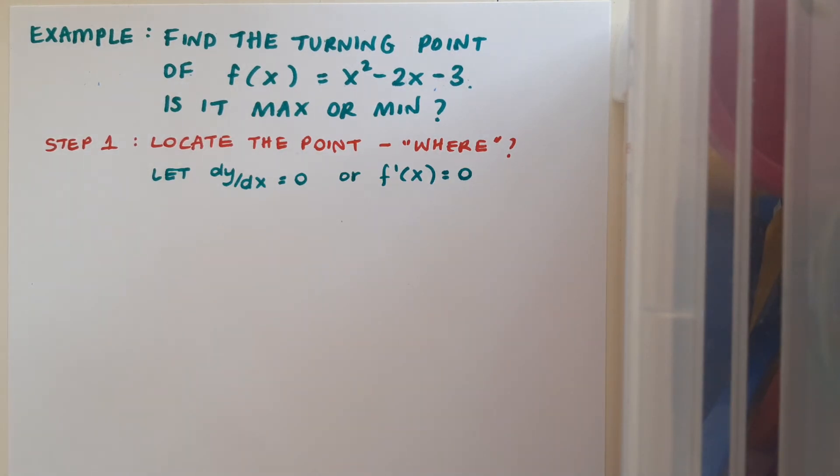So f'(x) just means I need to differentiate f(x). When I differentiate f(x), I'm going to get 2x - 2. Now I need to let this equal to zero, and then I'm going to want to solve the equation. So I'll start by bringing the 2 across the equal sign, and then I'll divide by 2 to solve for x. So my solution for x is x = 1.